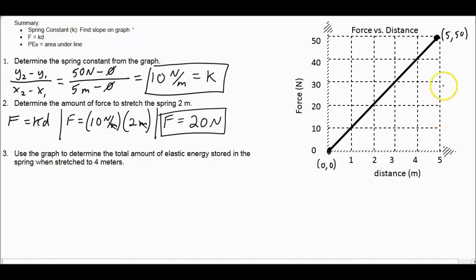Now it is tempting to find the area under the entire thing, but we do not want the entire thing. We just want to 4 meters. So what that means is here is 4 meters. We want to find the area under the line up to there. So that will be just this triangle.